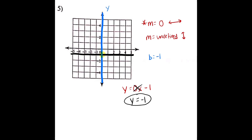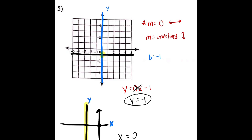Undefined slopes are the opposite. The line is straight up and down — it never crosses the Y-axis. Undefined lines are special because they have an X-intercept instead. So the equation for an undefined slope line is X equals something. For example, if the line passes through two, the equation would be X equals two. That is how you handle the special cases. I hope this video helped you guys out a lot. I will see you later. Bye.